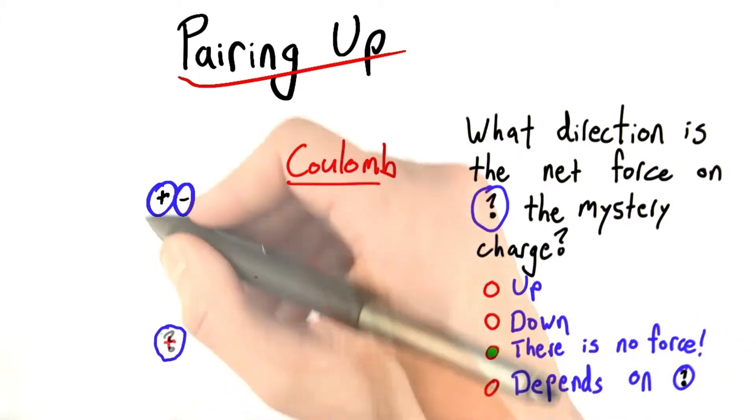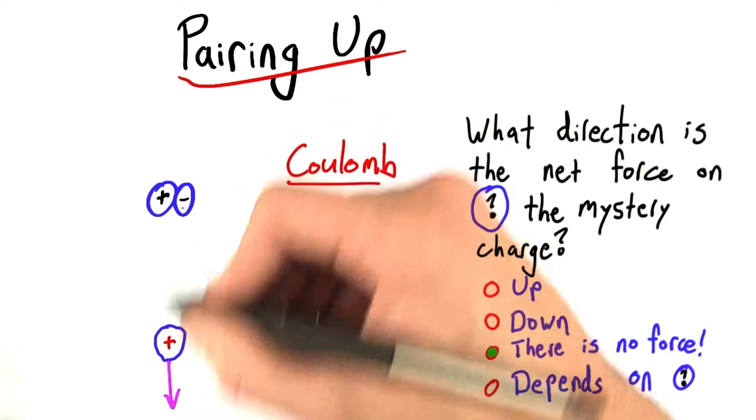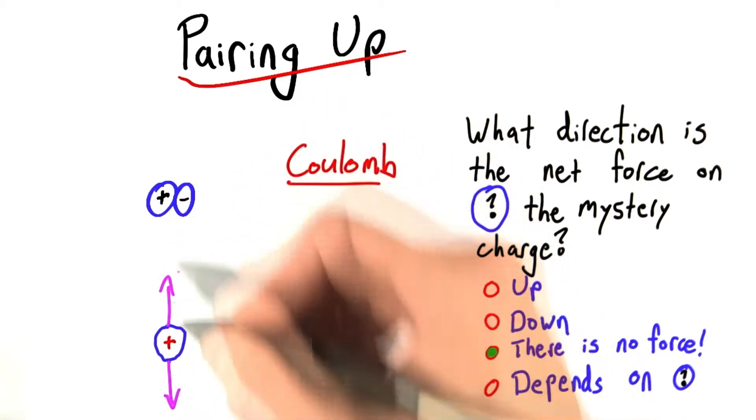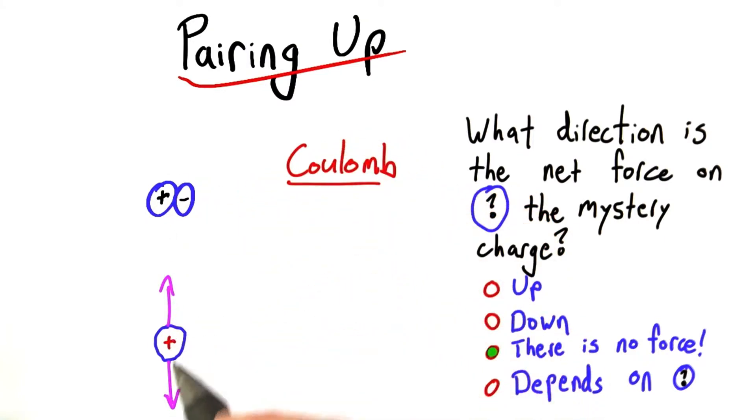Because, let's say this were positive. Well then, it's going to feel a repulsive force from this positive guy, and an equal attractive force from the negative. Since these are the same size force, these are going to exactly balance out.